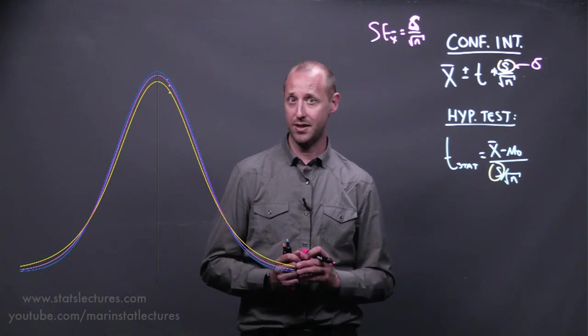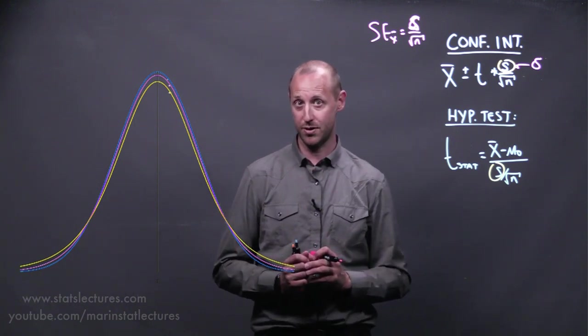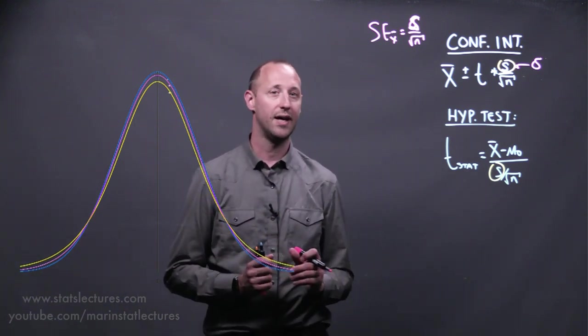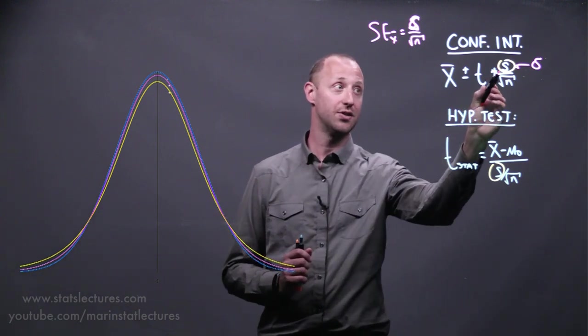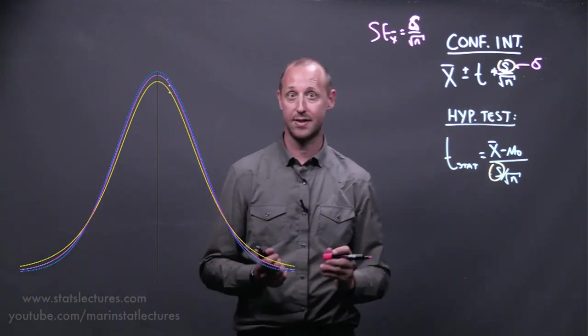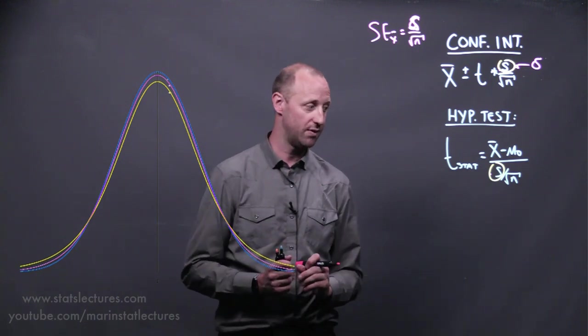Essentially, the t-distribution is like the standard normal distribution, except it accounts for the extra uncertainty in having to estimate the standard deviation using the sample standard deviation.